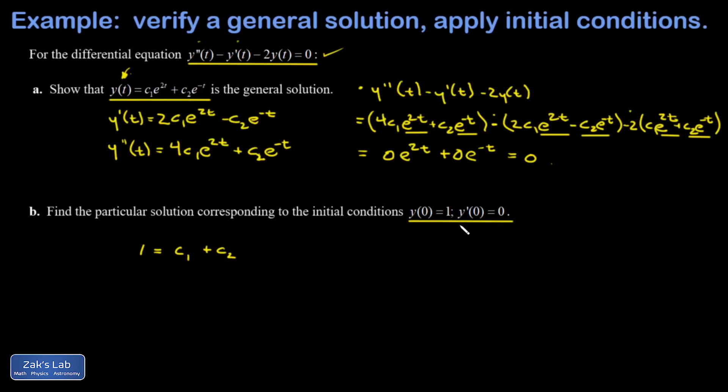Then my second initial condition is y'(0) = 0. So I have an expression for y prime written down already, and if I replace t with 0, I'm supposed to get 0. Again, these exponentials are simple when I plug in 0 for t—they just turn into 1. So I have 2c₁ - c₂.